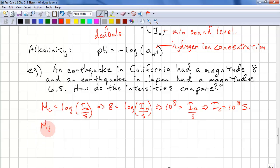Now the magnitude of the Japanese earthquake, MJ, is log IJ over S. And we have 6.5 log IJ over S. Again we need to exponentiate both sides with a base of 10. So this is 10 to the power of 6.5 equals IJ over S. So IJ equals 10 to the power of 6.5 times S.